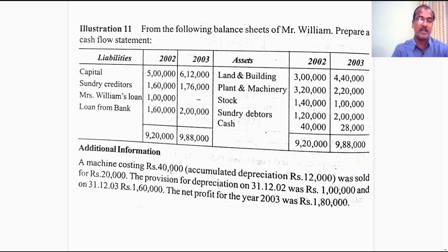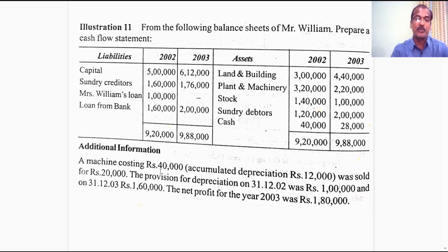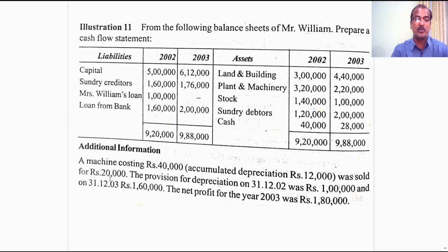Let us look at the additional information. A machine costing 40,000 rupees with accumulated depreciation of 12,000 was sold for 20,000. So from the cost value of 40,000, if you subtract the accumulated depreciation of 12,000, you get a book value of 28,000. But it is sold only for 20,000. Therefore, this business has incurred a loss of 8,000 rupees in disposing of a part of the machinery.